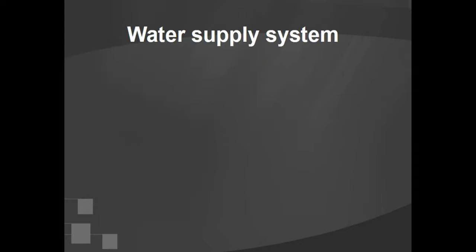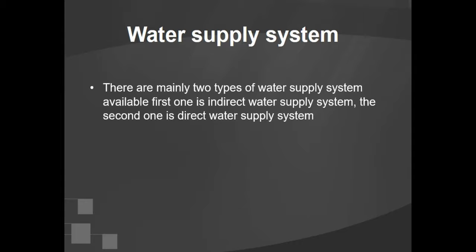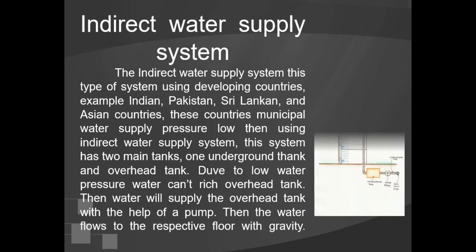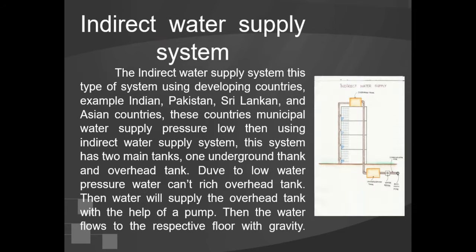Next we talk about water supply systems. There are mainly two types of water supply system available: the first one is the indirect water supply system, and the second one is the direct water supply system. The indirect water supply system is used in developing countries.